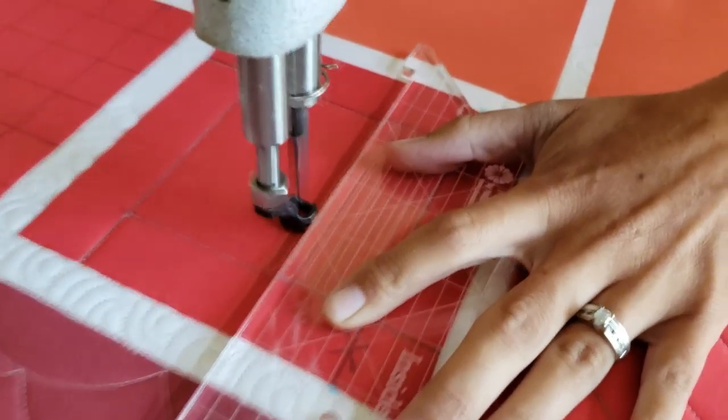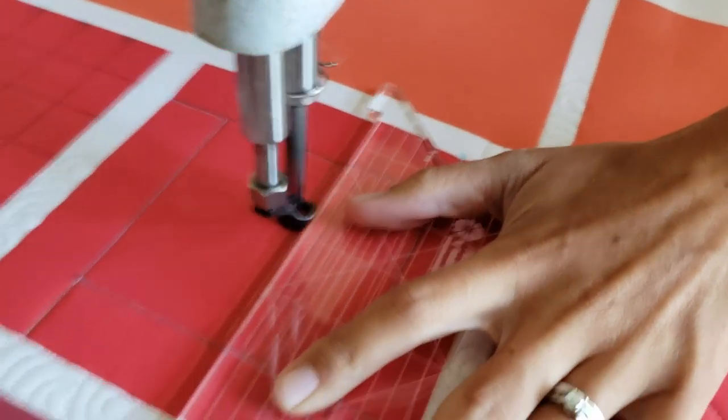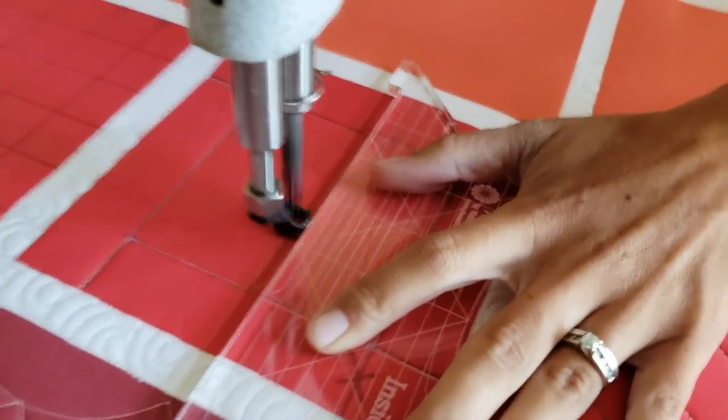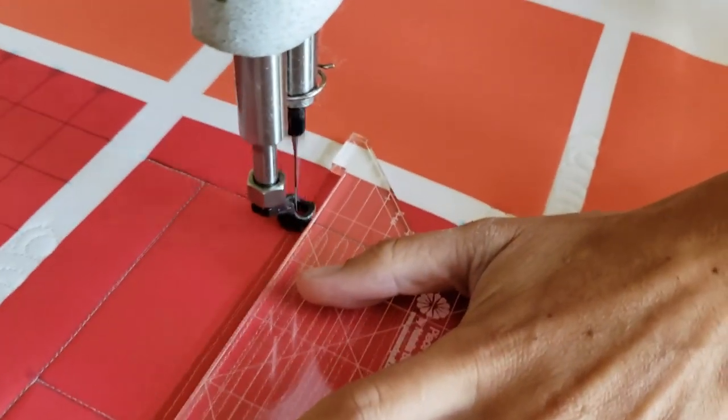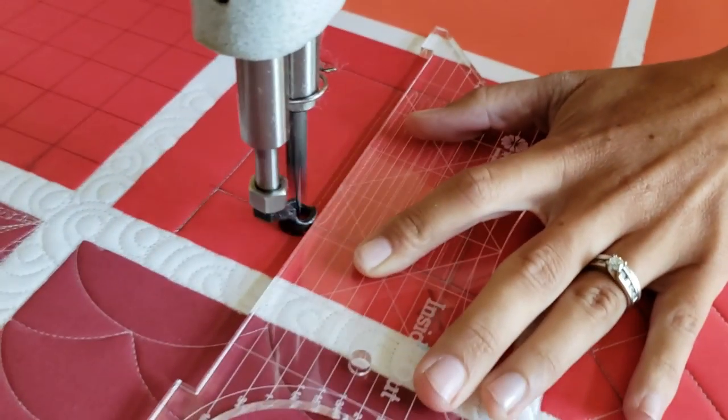From that point I'll move to the inside of the block and I'm going to fill in here with some fun straight line matchstick quilting. Now you could really do any filler in here. This would be a great design to show off something fun in the center of that block.